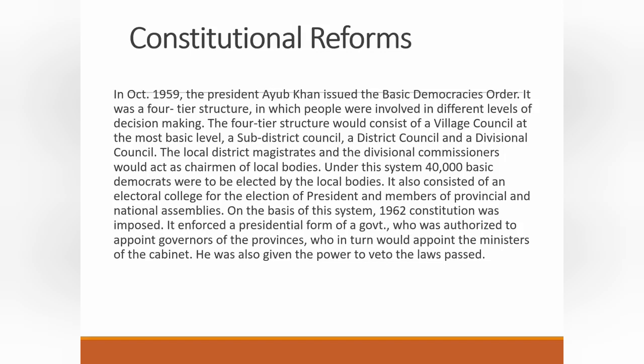In October 1959, President Ayoub Khan issued the Basic Democracies Order. It was a four-tier structure in which people were involved in different levels of decision making. The four-tier structure consisted of a village council at the most basic level, a sub-district council, a district council, and a division council. The local district magistrate and divisional commissioners would act as chairman of the local bodies.